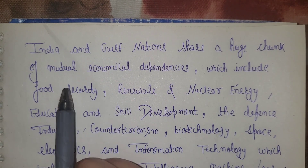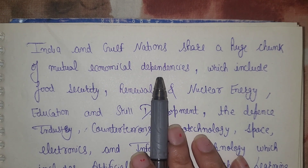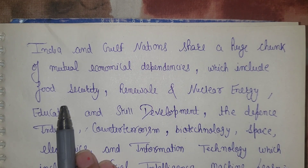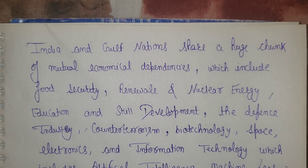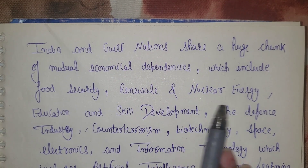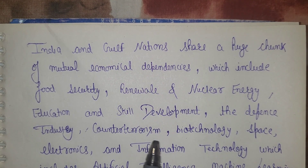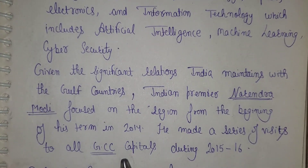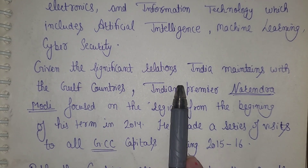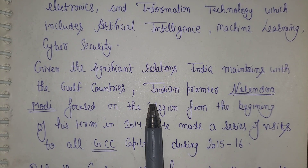India and Gulf nations share a huge chunk of economic dependency, covering food security, nuclear energy, education, skill development, defense industry, counter-terrorism, biotechnology, space electronics, IT, artificial intelligence, machine learning, and cyber security. Given the significant relation India maintains with Gulf countries, both nations have mutual dependency across international platforms. India has also promised to export wheat to Saudi Arabia and UAE, showing strong food security ties.